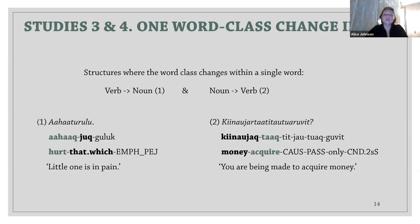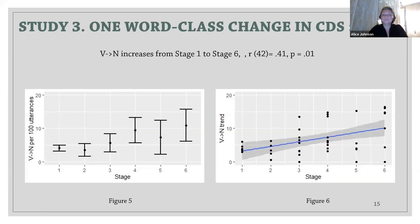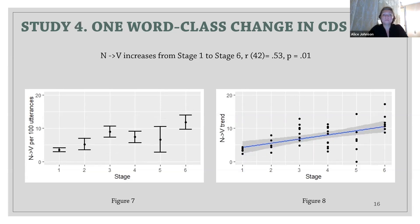In studies three and four, we looked at polysynthetic structures where the word class changes within a single word. The first example demonstrates how a verb changes into a noun with the help of a nominalizer, while the second example shows how a noun can change into a verb with a verbalizer. Figures five and six show that the use of structures where a verb changes into a noun within a single word is positively correlated with the stages of linguistic development. Figures seven and eight show the similar trend for structures where a noun changes into a verb within a single word.